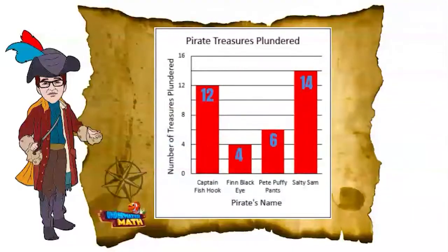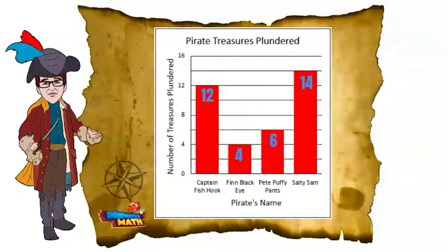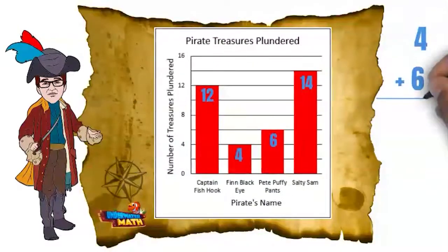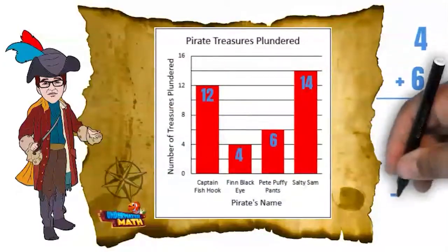How many more treasures did I plunder than Finn Black Eye and Pete Puffy Pants combined? First, find out how much Finn and Pete plundered combined: 4 plus 6 equals 10. Then subtract that amount from the amount of treasure I plundered: 12 minus 10 equals 2.